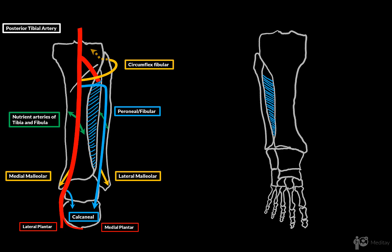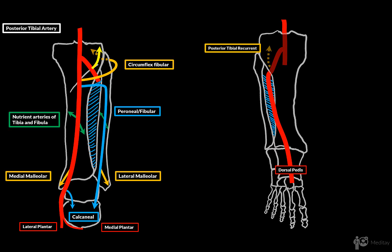Now let's look at the anterior tibial artery. Again, the popliteal artery comes down and divides. The anterior tibial artery will sneak out between the tibia and the fibula and wind anteriorly, ending at the first metatarsal space where it becomes the dorsal pedis artery. The anterior tibial mainly supplies the anterior muscles of the leg. The first side branch is the posterior tibial recurrent, which branches out right before the anterior tibial artery reaches the anterior surface. We also have the anterior tibial recurrent artery, which branches out when the anterior tibial reaches the anterior surface. These two go up and supply the knee with blood.